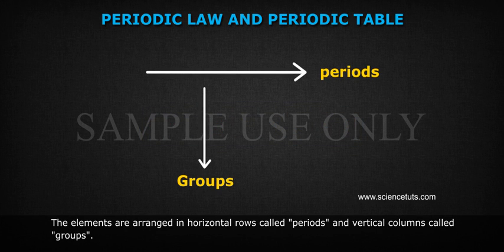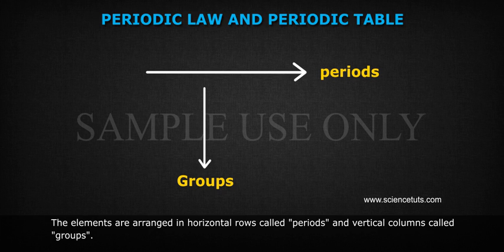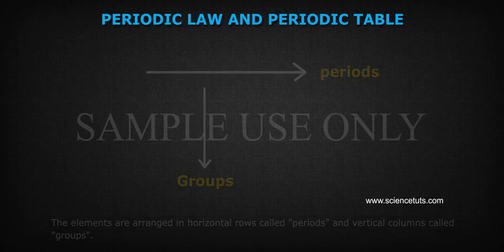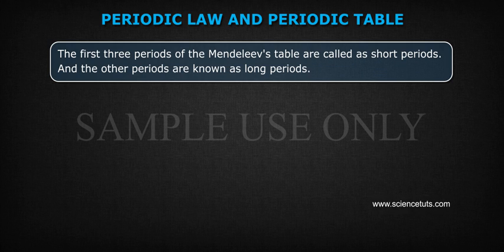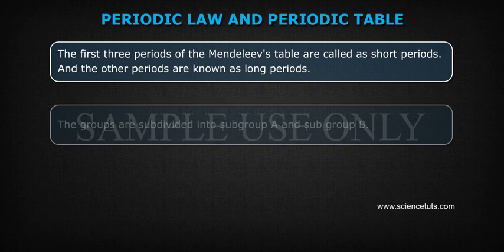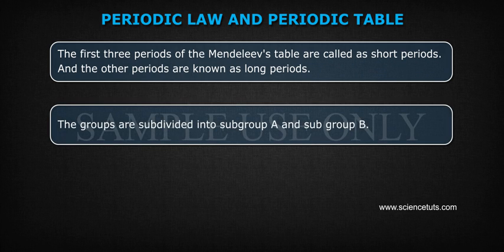The elements are arranged in horizontal rows called periods and vertical columns called groups. The first three periods of Mendeleev's table are called short periods and the other periods are known as long periods. The groups are subdivided into subgroup A and subgroup B.